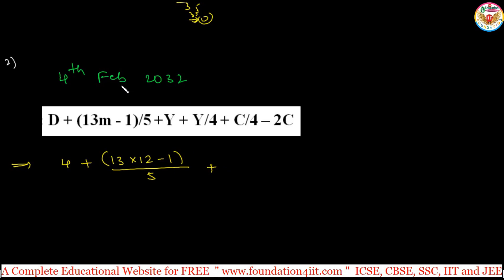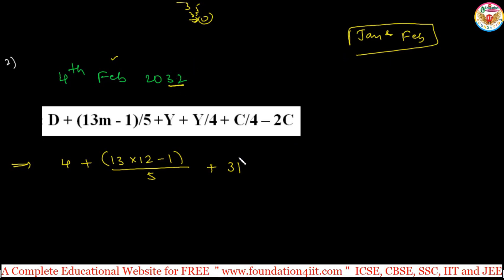Because this is February, we use the previous year. The year starts from March, so January and February belong to the previous year. Instead of y = 32, we take y = 31. The century c = 20 stays the same. So the expression becomes: 4 + ⌊155/5⌋ + 31 + ⌊31/4⌋ + ⌊20/4⌋ − 2×20. That gives: 4 + 31 + 31 + 7 + 5 − 40.